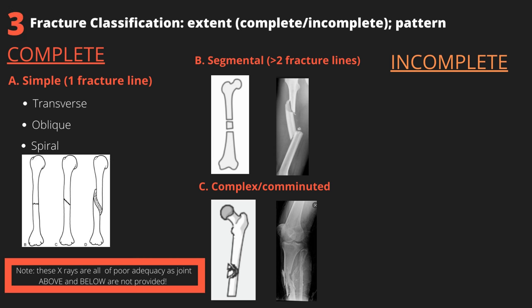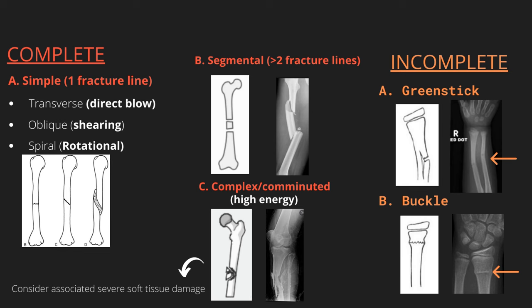To classify a fracture, first identify if it is complete or incomplete — does it communicate with the cortex on either side of the bone? Complete fractures can be simple, segmental, or complex. Simple fractures consist of a single fracture line and can be transverse, running horizontally through the bone, often the result of a direct blow; oblique, running at an angle due to shearing forces; or spiral, appearing to corkscrew around the bone due to rotational injury. Segmental fractures occur when there are more than two fracture lines, creating a tubular segment in the shaft. Complex or comminuted fractures consist of multiple fragments, usually due to high-energy injuries, and are unstable as they lack lateral and longitudinal stability.